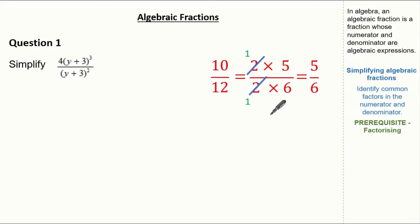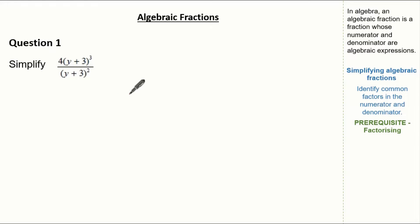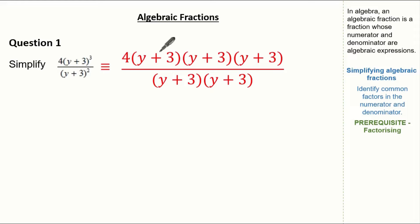The factors of 2 cancel, leaving 1 times 5 which we know as 5 and 1 times 6 which we know as 6. So the knowledge we have here can be applied to this question. Let's write out our factors and see if we can cancel down. This is equivalent to 4(y+3)(y+3)(y+3), so you can see this is our (y+3) cubed, and we know (y+3) squared is simply (y+3)(y+3).